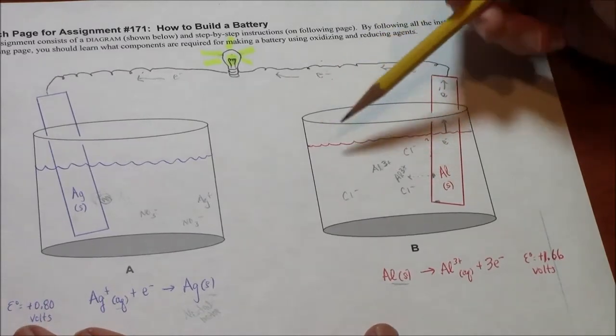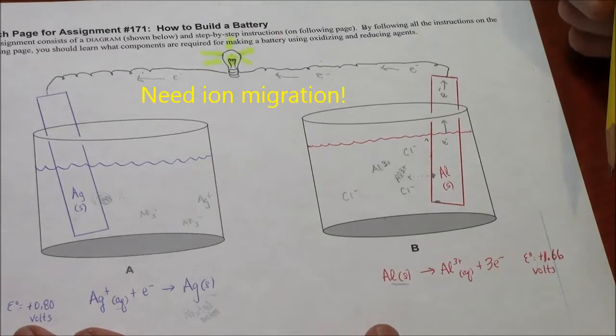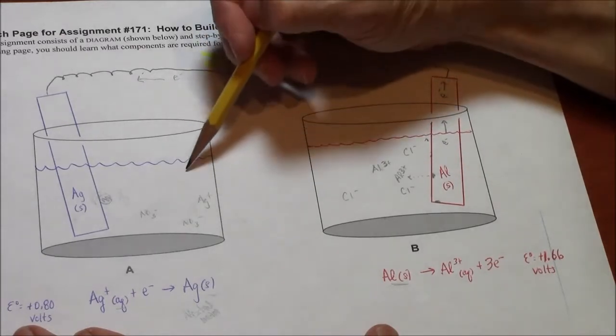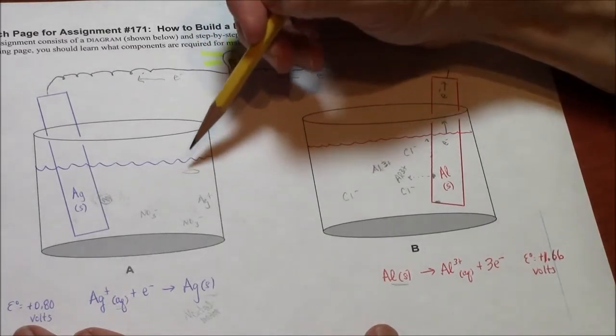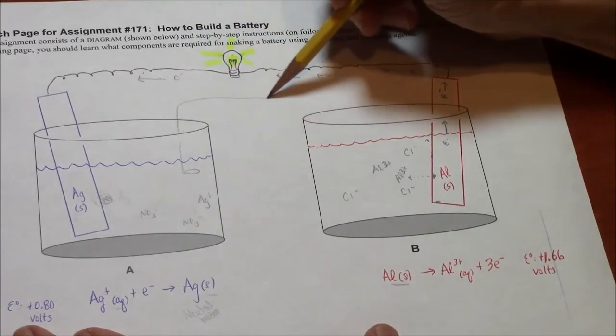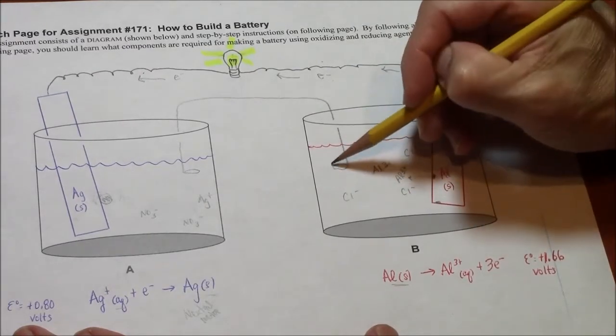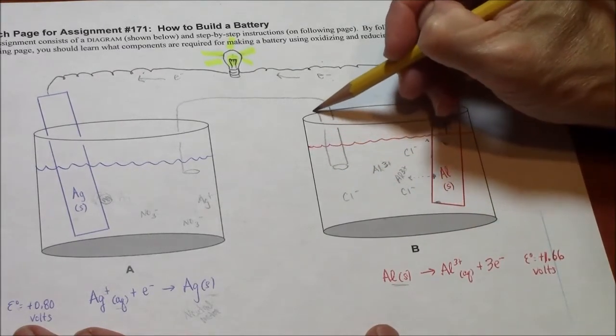The solution to this problem is to allow ions to migrate from beaker to beaker. That's done using a tube called a salt bridge. So I'm drawing a salt bridge here. I can show you what this looks like in real life in just a second.